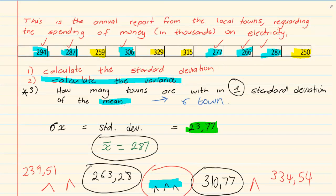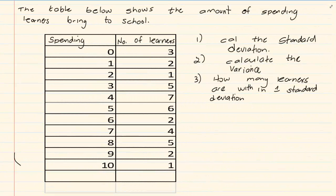However, now you would make use of the frequency table on your calculator. When you start, first press Shift and Setup. Go down and you would see number three, which is Stats. Make sure that frequency is on, which is one. Then go to Mode and number two. Then you are going to press number one for variance and you are going to start filling in the information.